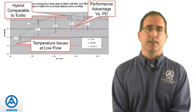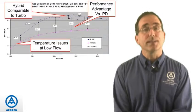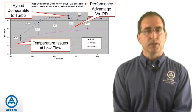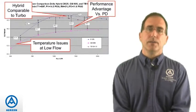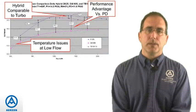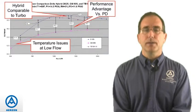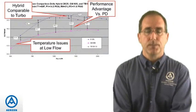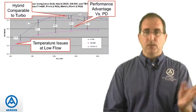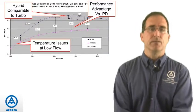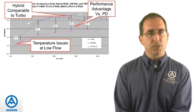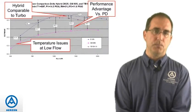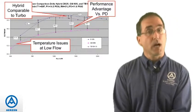Let's look at a comparison of the three technologies and the efficiency comparison between them. The first example compares a standard PD blower, along with a turbo blower, and our hybrid blower — which is Airzen's version of a screw compressor — along a particular flow range at a particular pressure in a given set of ambient conditions. In this particular example, there's a big performance advantage over the PD, primarily because it's at a higher pressure.